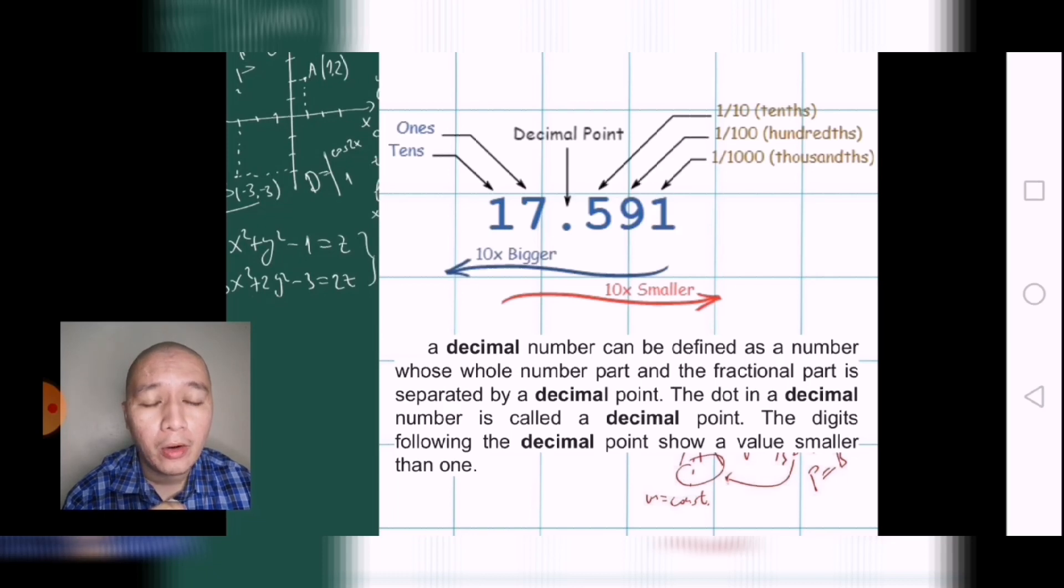And then rightwards, we will have one-tenths, one-hundredths, and one-thousandths. A decimal number can be defined as a number whose whole number part and the fraction part is separated by the decimal point. The dot in the decimal number is called a decimal point. The digits following the decimal point show a value smaller than one. So we have to take note that when we talk of decimals, it is in the subdivisions of ten, because of the root word deci, or ten.